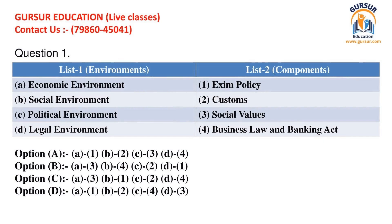Question number 1. Two lists are given in this question. You have to match correct items of list 1 with correct items of list 2. List 1 (Environments) contains: A. Economic Environment, B. Social Environment, C. Political Environment, D. Legal Environment. List 2 (Components) contains: 1. Exim Policy, 2. Customs, 3. Social Values, 4. Business Law and Banking Act. Below are given the options with different matches. You can pause the video and choose the appropriate answer. The right answer is option A. We suggest you to pause the video to analyze and learn the correct combination.